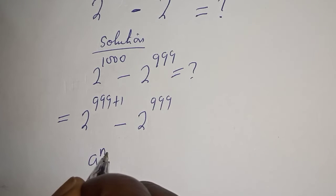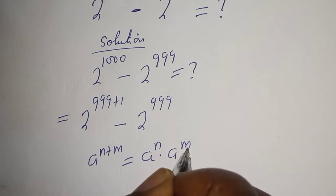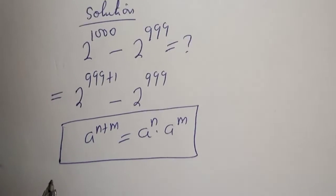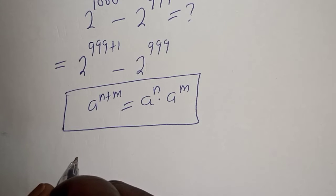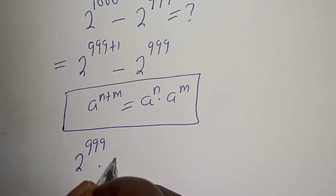If you have a raised to power n plus m, this is equal to a raised to power n multiplied by a raised to power m. Then 2 raised to power 999 plus 1 can be written as 2 raised to power 999 multiplied by 2 raised to power 1.